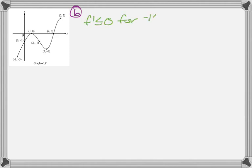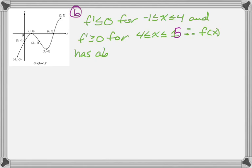So what we're going to do is first find the absolute minimum. You can look at the graph and just see that f prime is less than or equal to 0 for all x between negative 1 and 4. And then you can see that f prime is greater than or equal to 0 for all x between 4 and 5. Therefore, we know for a fact that f of x has its absolute minimum at x equals 4. Because it's the only critical point that has a sign change.